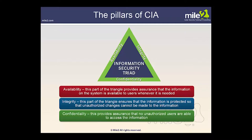Looking at availability first: this is the part of the triangle that provides assurance that information on the system is available to users whenever it is needed. If our systems are not up and running and we lack availability, we do not look good to our customer base — it looks like we don't have our information security under control and can't deal with denial of service attacks. Availability of these resources so users and customers can get to what they need is very important.